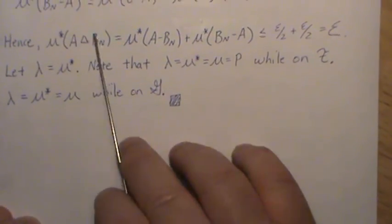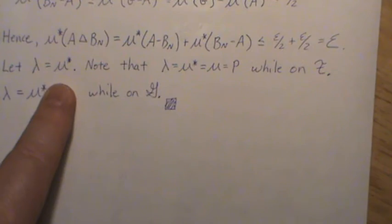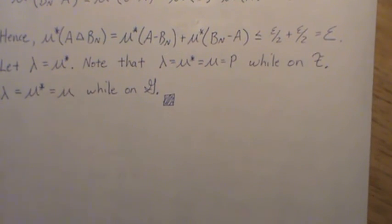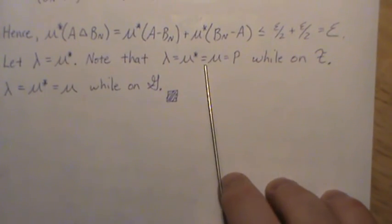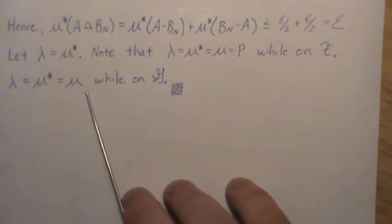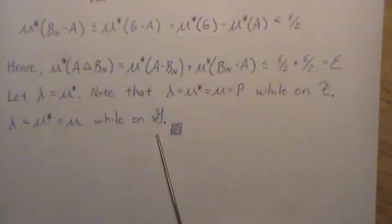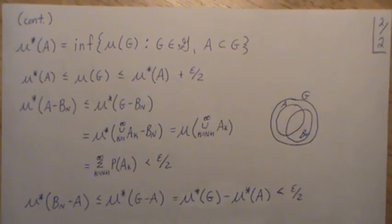But note that lambda is lambda star. And note that lambda is equal to lambda star and equal to μ and equal to P while it's on the field. And it's also equal to μ* and μ while it's on script G. And so this μ* is lambda.